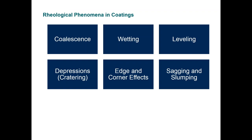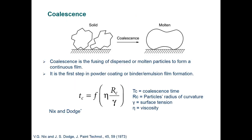It behooves us to know some of the problems or processes that can affect the coating — that could include coalescence, wetting, leveling, the formation of depressions, or painting on corners and edges, sagging and slumping on vertical surfaces. Coalescence, for example, can be quantified by the amount of particles present, the surface tension, and the viscosity. The particle will coalesce to form a larger particle, and larger particles will then aggregate to form, eventually, a film.